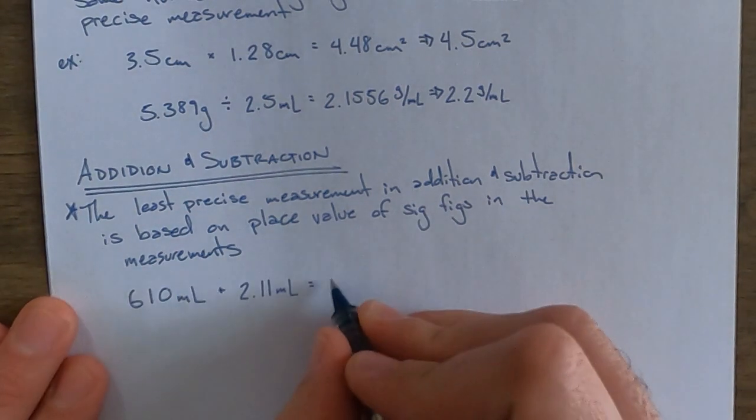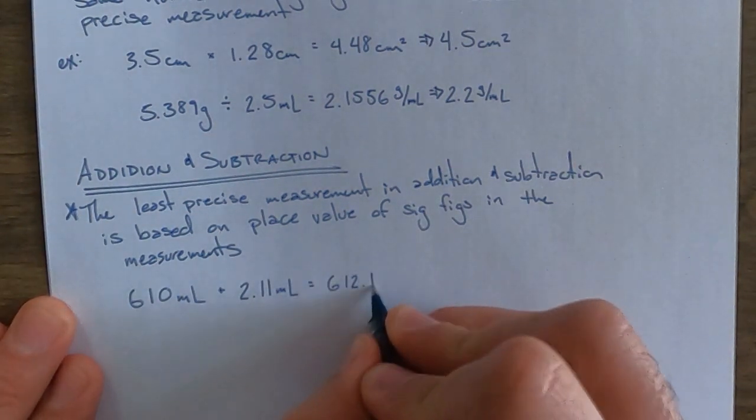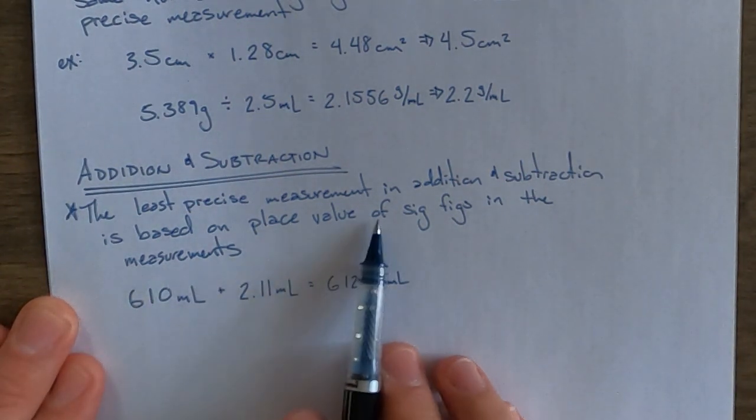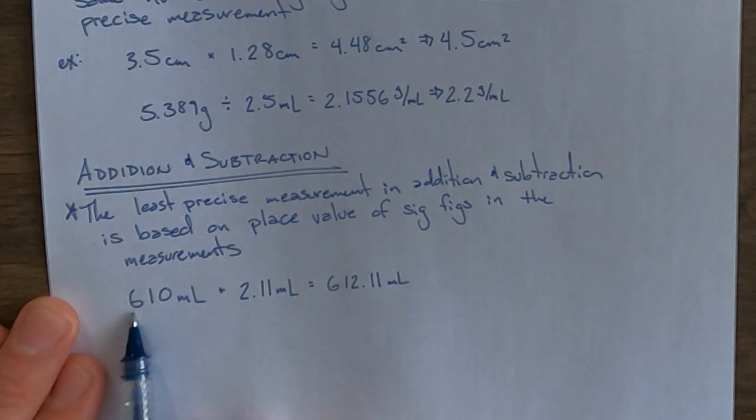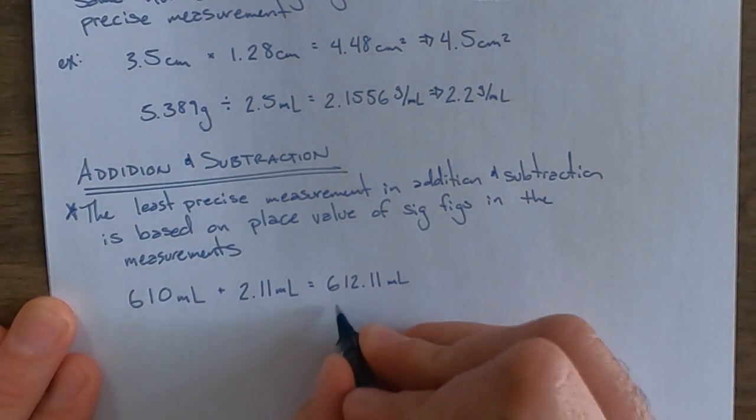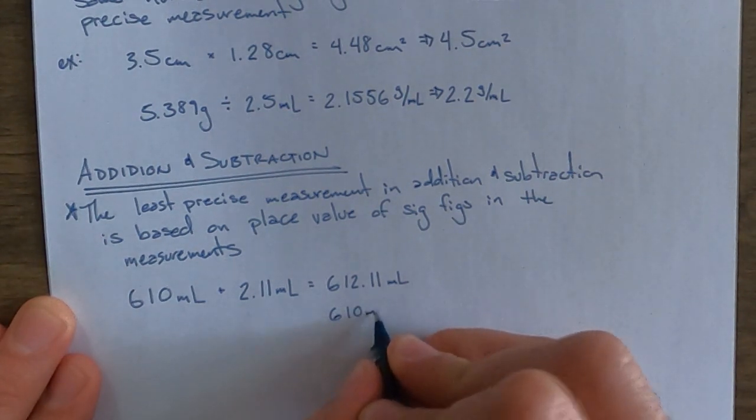Our calculator would give us an answer of 612.11 milliliters. But the rule is that we look at the place value, and the one that has the least precise place value is that it needs to be rounded to the tens place. And so 612.11 rounded to the tens place would just be 610 milliliters.